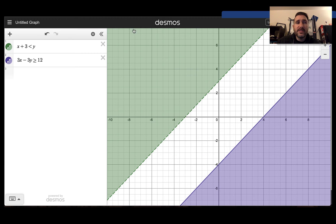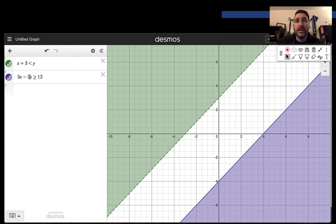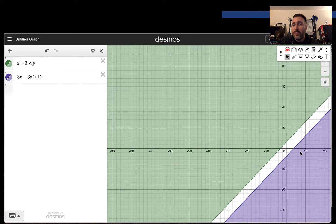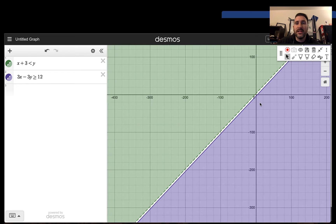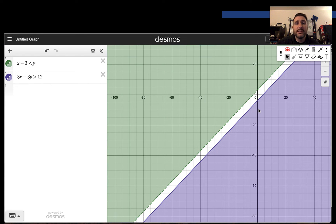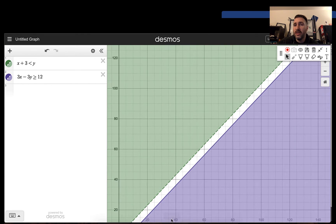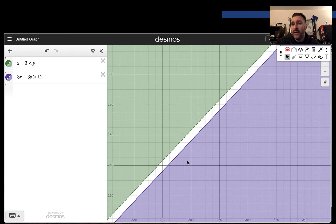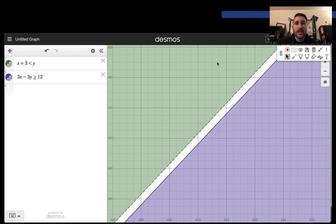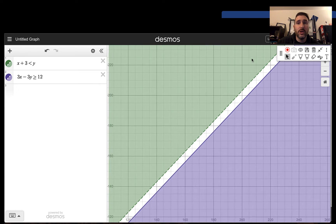Let's check using Desmos. In Desmos, I have my two inequalities typed in. We can see Desmos is helpful because, again, it graphs it for us, and it shows us what kind of boundary line we need to use. So I have x plus 3 is less than y, the green shaded area here, and 3x minus 3y is greater than or equal to 12. That is the purple shade here. We can zoom out, and yes, the lines are getting closer and closer, but there is no place where they ever will cross over and double shade. So this would be another one that has no solution.